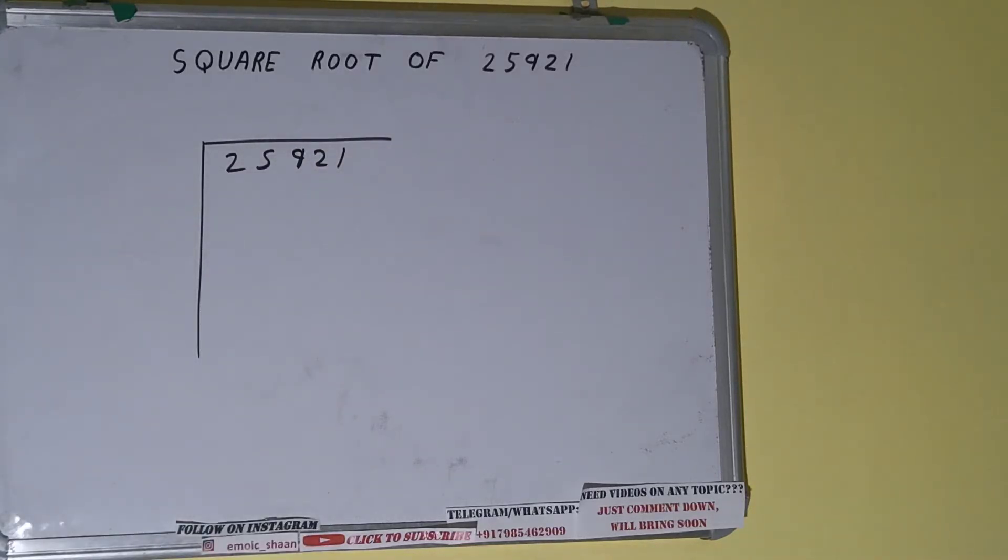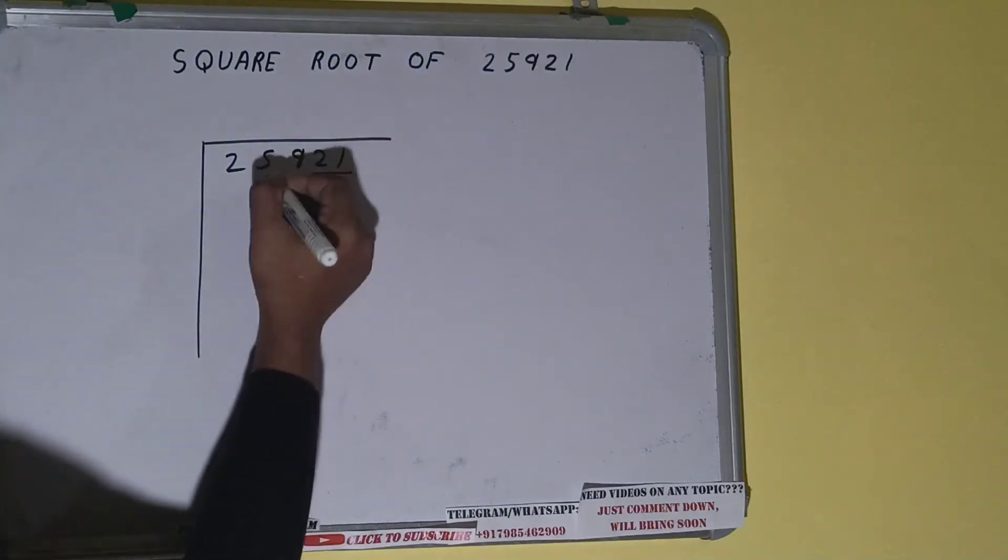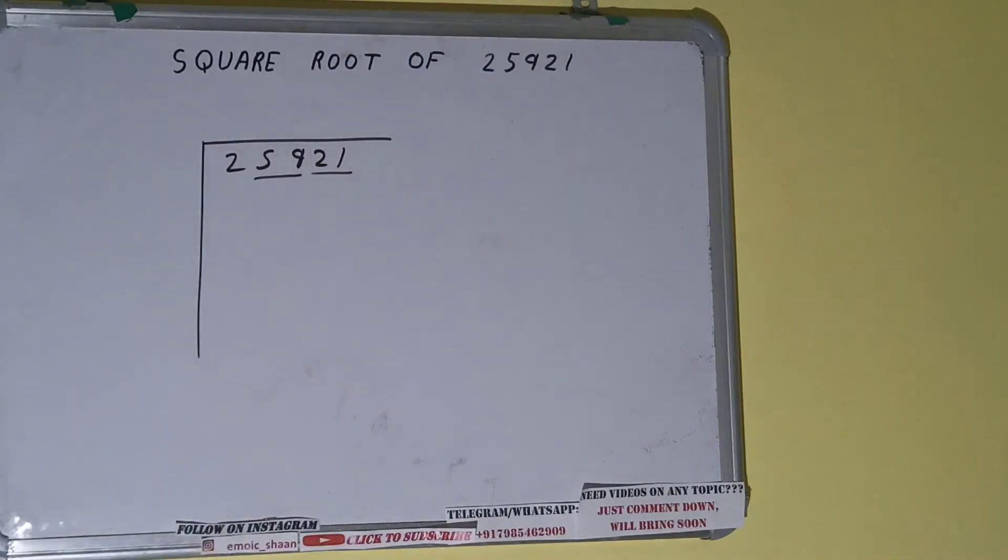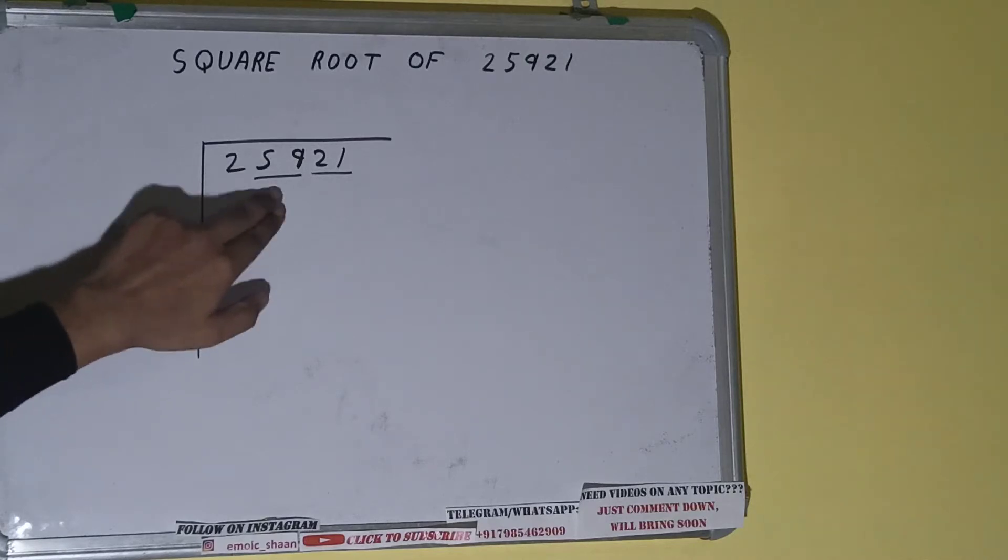We need to form pairs from the right hand side. So one pair will be this, one pair will be this, and this two will be left out. So first we'll divide this two and then we'll bring down the pairs.